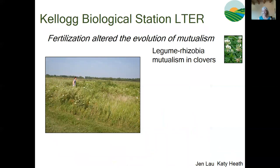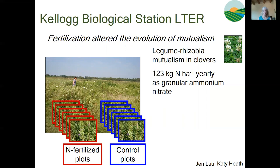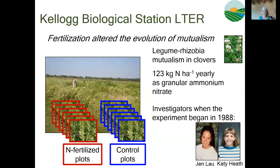For our final example, I take you to Kellogg Biological Station in northern Michigan. Here, researchers have been fertilizing old fields for more than three decades. In this case study, the focal species were clovers and their beneficial rhizobia bacteria. This mutualism is one of the most important mutualisms in terrestrial ecosystems. Rhizobia fix atmospheric nitrogen into a form that plants can use, then trade that nitrogen for carbon from the plant. The fertilizer additions in this experiment were comparable to the high end of additions at Harvard Forest, with 123 kilograms of nitrogen per hectare per year added as granular ammonium nitrate. The long-term nature of this experiment is perhaps best illustrated by these photos showing the lead investigators, who were in elementary school when this experiment began.